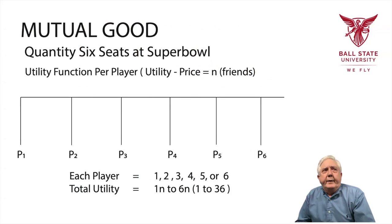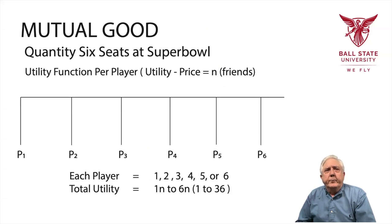So what we have is a situation in which each player gets one, two, three, four, five, or six utils, depending on how many friends they go with. The total utility then is 1N to 6N, or somewhere between 1 and 36.